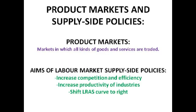Product markets are markets in which all kinds of goods and services are traded — basically, anything you can buy or sell. The big aims of product market supply side policies are to increase competition and efficiency in order to keep prices low, making firms more internationally competitive. Privatisation — the sale of government-owned assets to the private sector — tends to produce more efficient and competitive enterprises because privately-run firms face the discipline of the market, leading to a rightward shift of the aggregate supply curve as they cut costs to stay competitive.